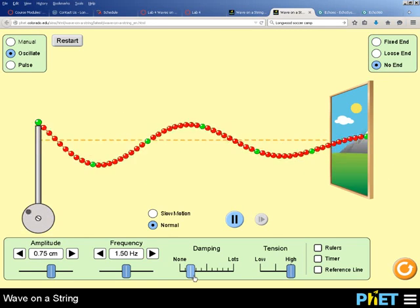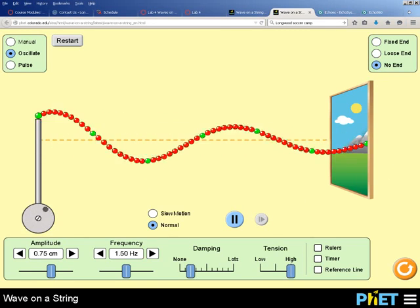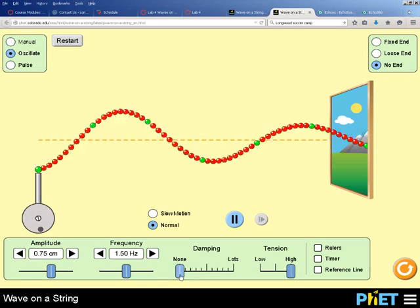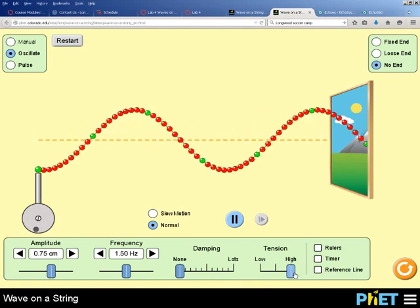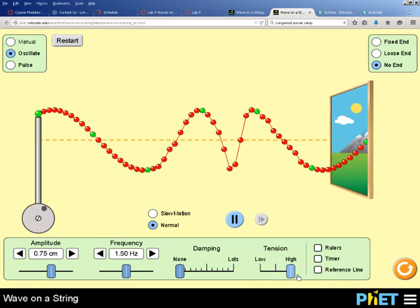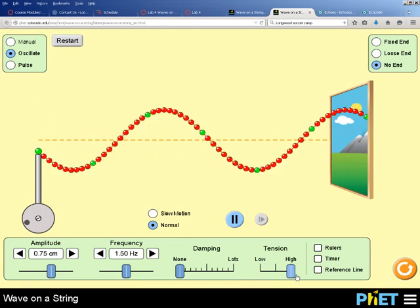Additionally, there's some damping involved, which is why the amplitude is changed down here at the end. So we want to change the damping to none. And you can also adjust the tension between high and low. I'm just going to leave it set at high at the moment.